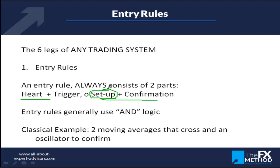A classical example would be two moving averages — checking that they cross each other, that the short moving average is above the long moving average for a sell signal — confirmed with an oscillator like RSI or MACD. In this system it's very different. The very precise rules of the trading system I'll write in blue, so every time you see a blue slide it means these are the exact rules. When I talk generically it will be in black.